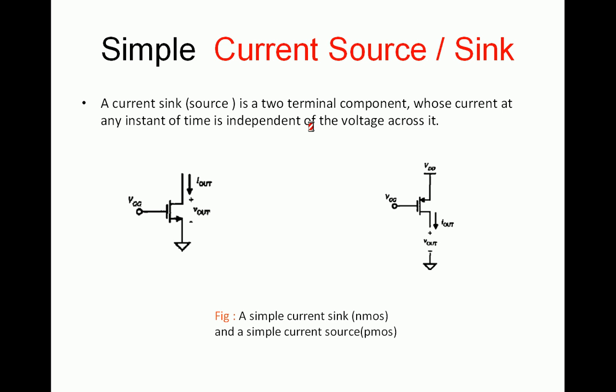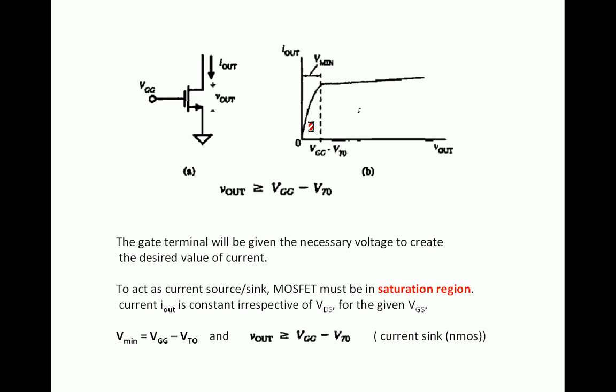The current flowing through an N-MOS transistor is independent of V-out. A MOS transistor can be operated in cutoff, linear, or saturation region. Under the saturation region, even though the output voltage increases, the current flowing through it remains constant — that is why it is called the saturation or constant current region. So I-out, the drain current, is independent of output voltage V-out, and a simple N-MOS transistor can act as a current sink.